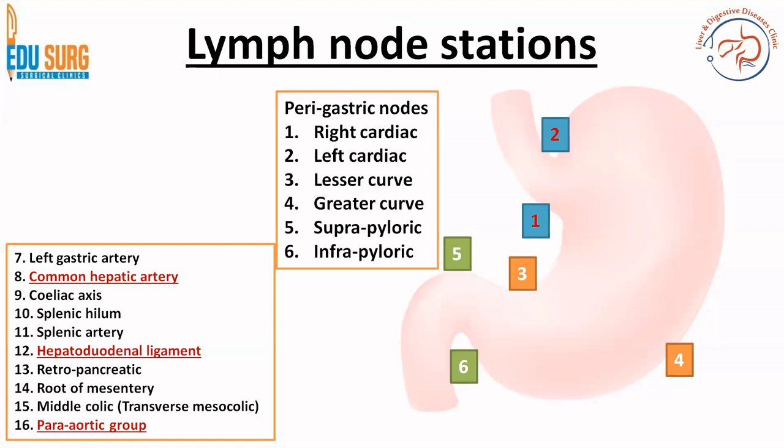Coming to the other numbers, these are more in relation to the vessels: left gastric artery, then the common hepatic artery, then the celiac axis. So if you see the blood supply chart in reverse direction — left gastric, common hepatic, celiac — so 7, 8 and 9 are that. 10 and 11 are splenic hilum nodes. 12 is the hepatoduodenal ligament nodes — you can have 12A, 12P and 12D to separate artery, vein and duct. 13 is retropancreatic, 14 is root of mesentery, 15 is colic and 16 is paraaortic.